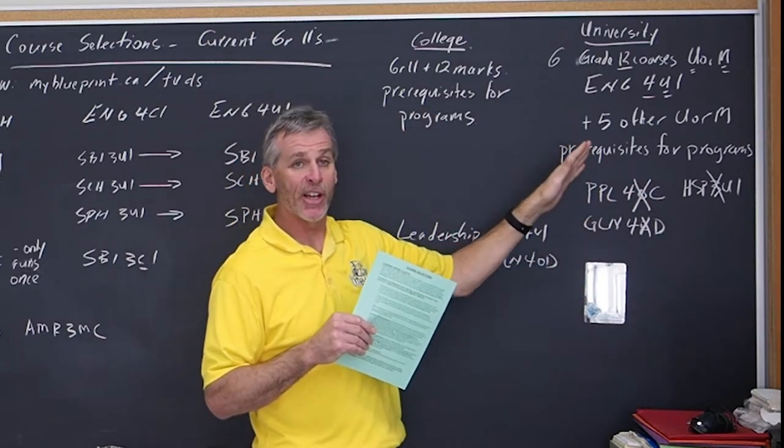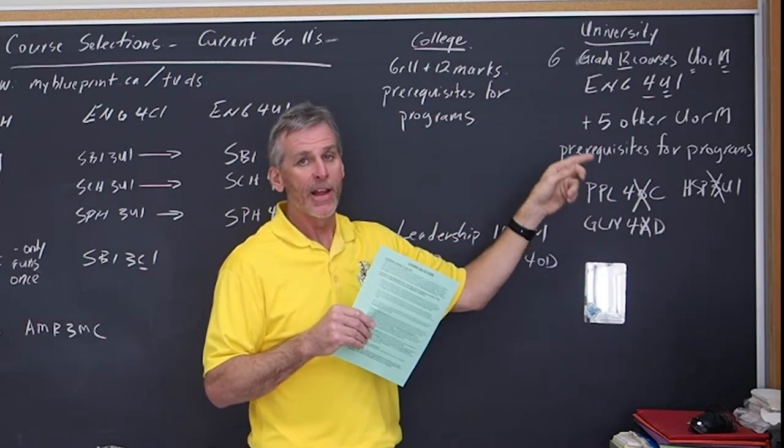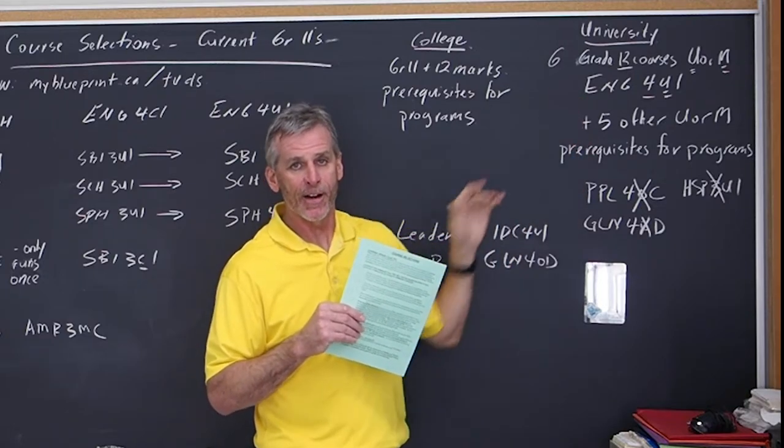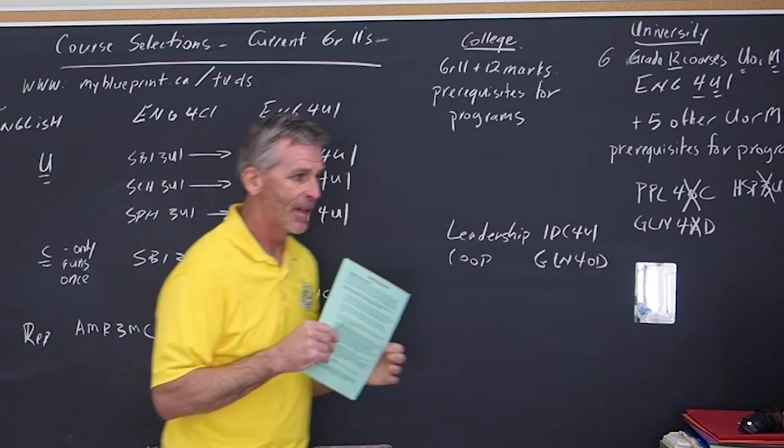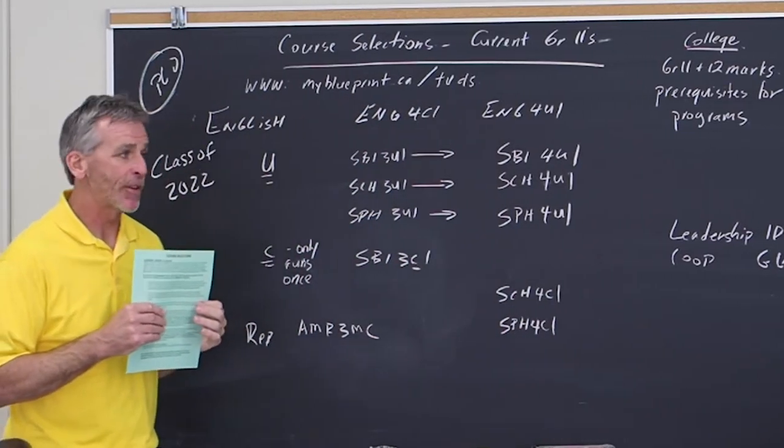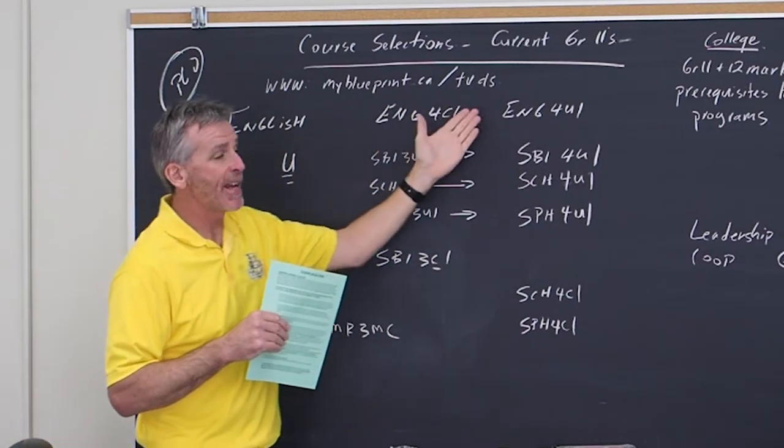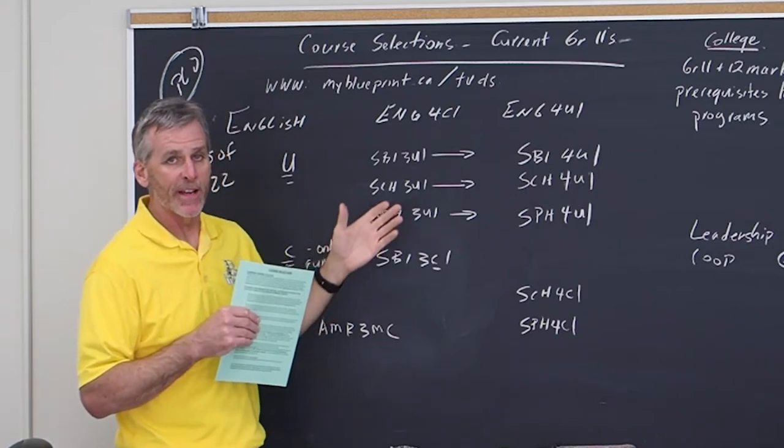So you must check that you have six. They are grade 12. And there are U or M as a fifth character with prerequisites for programs. So the only mandatory course you need for grade 12 is English. And what level you take is really based on what course you've taken in grade 11.